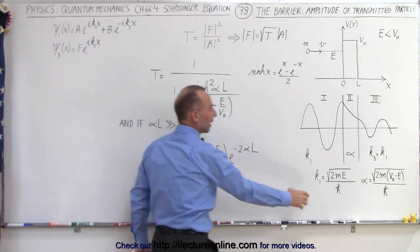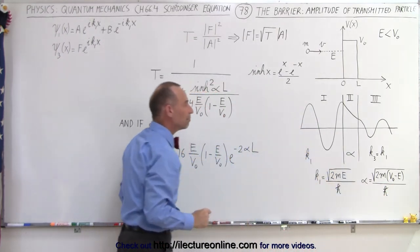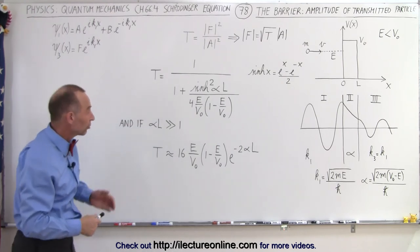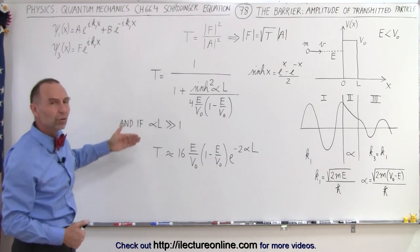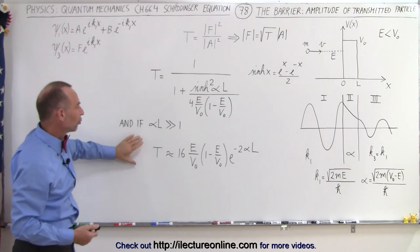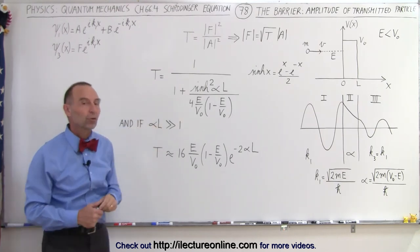Again, alpha is defined by this right here, and L is simply the width of the barrier. So we're going to show you some examples of how that actually works, how to calculate these values. We're going to show you the difference between these two and when it makes sense to use the simplified version versus this, and also we'll show you how to derive this equation, making this assumption as well.